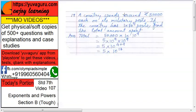A country spends around Rs. 50,000 each on its military posts. If the country has 1 into 10 raise to 9 posts, find the total amount spent.